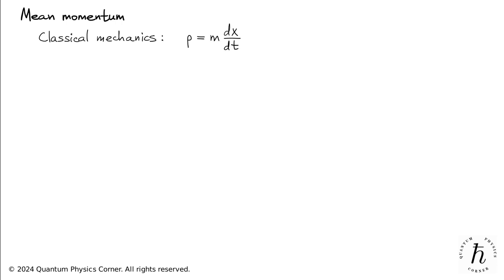The momentum of a classical particle is the product of its mass, m, and its velocity, dx by dt.